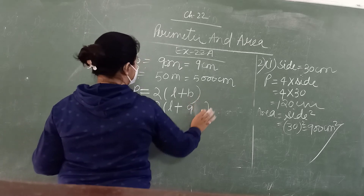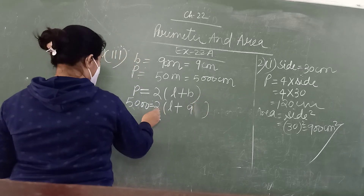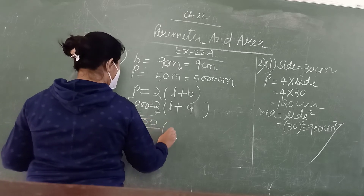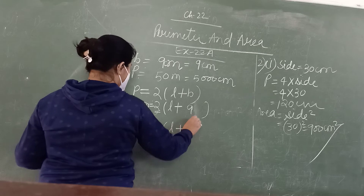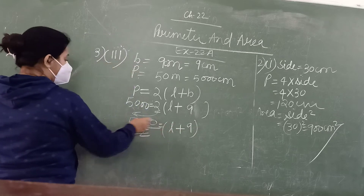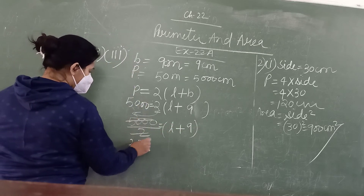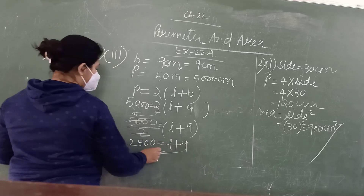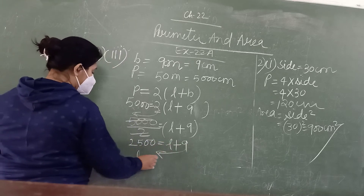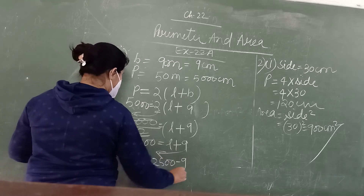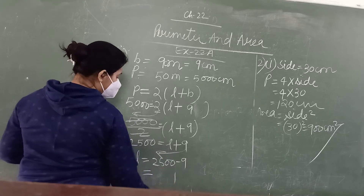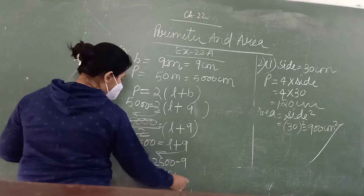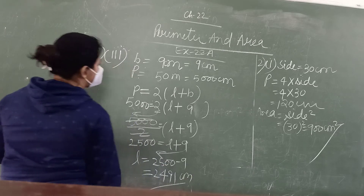Breadth B is 9 centimetres. Since 2 is in multiplication, it will go to division. So L plus 9 equals 5000 divided by 2, which gives 2500 equals L plus 9. So L equals 2500 minus 9, which is 2491 centimetres. This is the length.